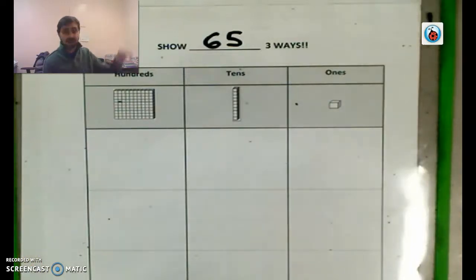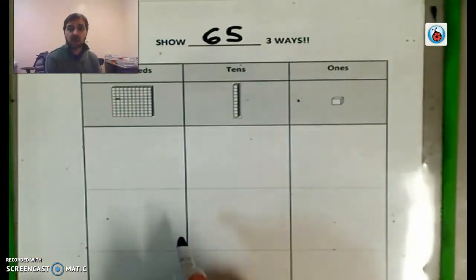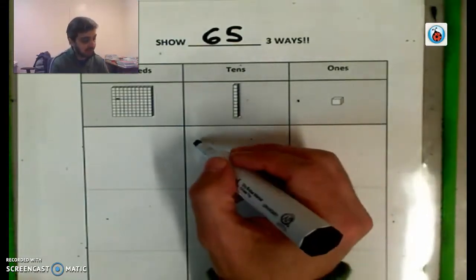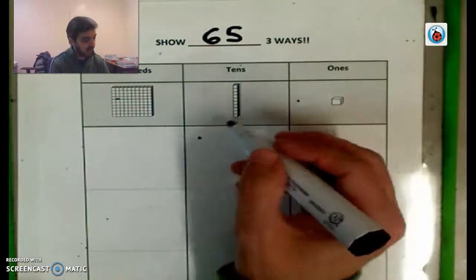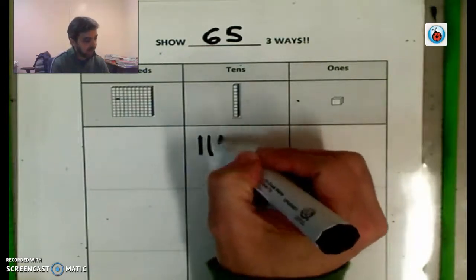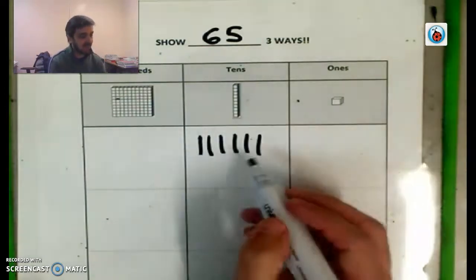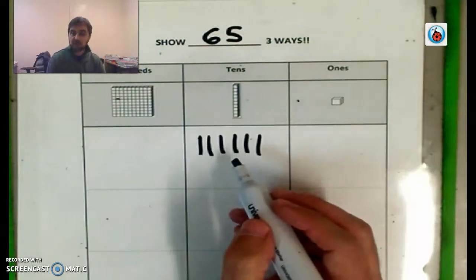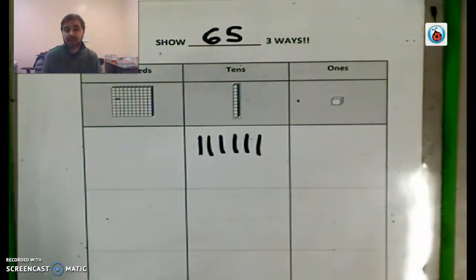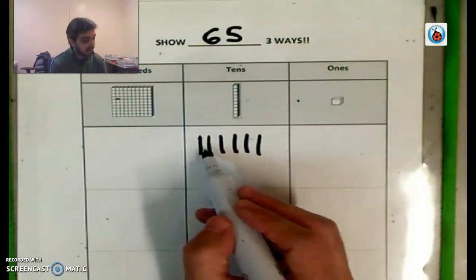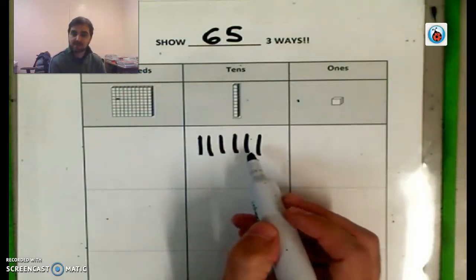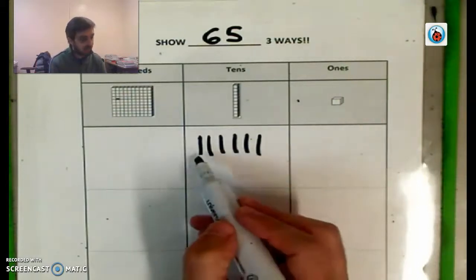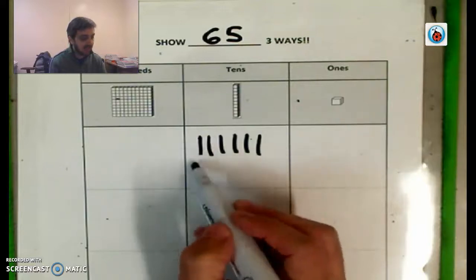All right. So you should have already done that. So let's take a look at what that looks like. So one way we know to show this number is we could do six tens, right? So we are thinking of starbursts or let's say Skittles this time, right? We have six bags of Skittles and in each bag, there's 10 Skittles.